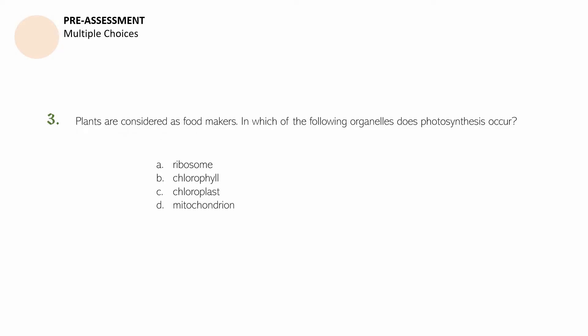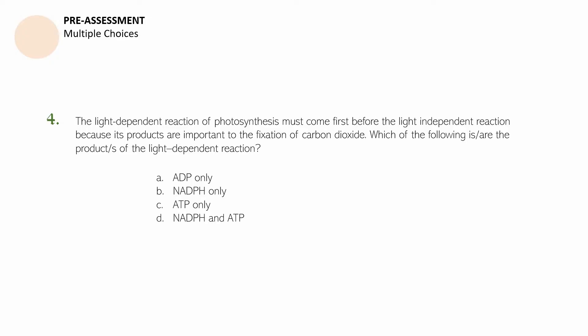Question number three: Plants are considered as food makers. In which of the following organelles does photosynthesis occur? You may pause this video to get more time. Question number four: The light-dependent reaction of photosynthesis must come first before the light-independent reaction because its products are important for the fixation of carbon dioxide. Which of the following is, or are, the products of the light-dependent reaction? A. ADP only. B. NADPH only. C. ATP only. D. NADPH and ATP. You may pause this video to get more time.